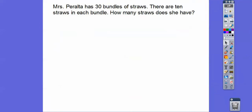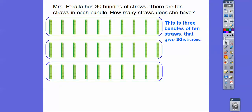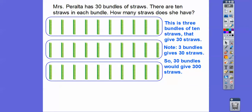Mrs. Peralta has thirty bundles of straws, and there are ten straws in each bundle. How many straws does she have? From before, three bundles of ten straws gave us thirty straws. Notice we just added a zero to how many bundles we have. So thirty bundles gives us three hundred straws.